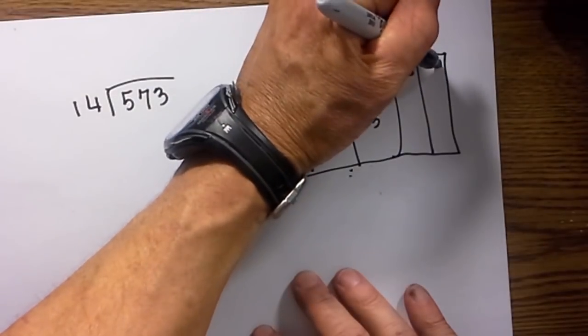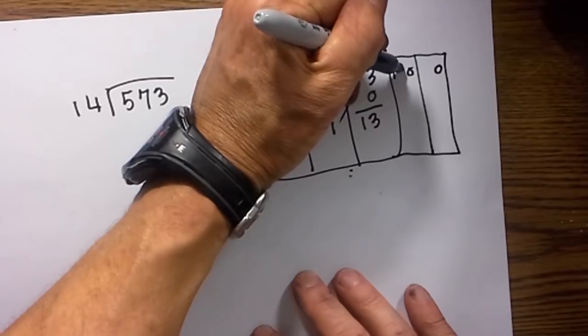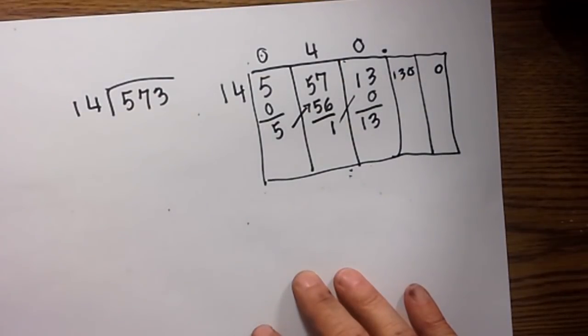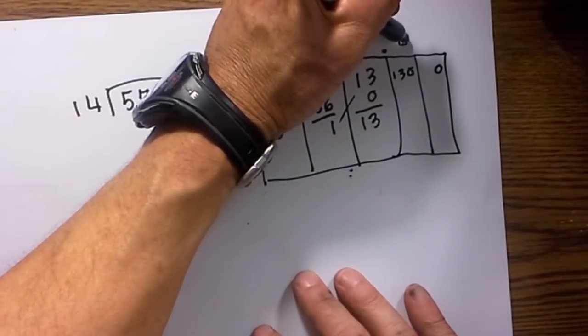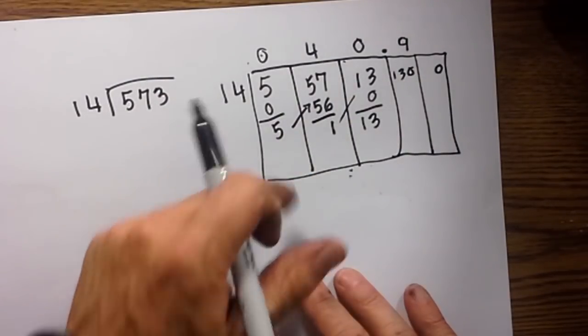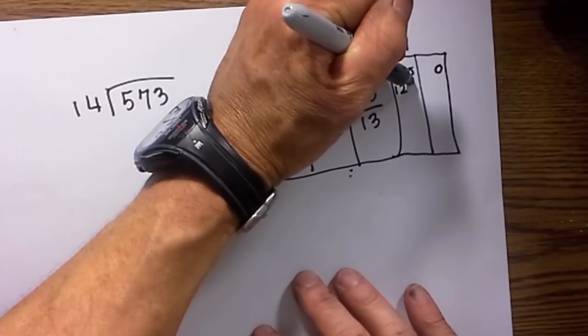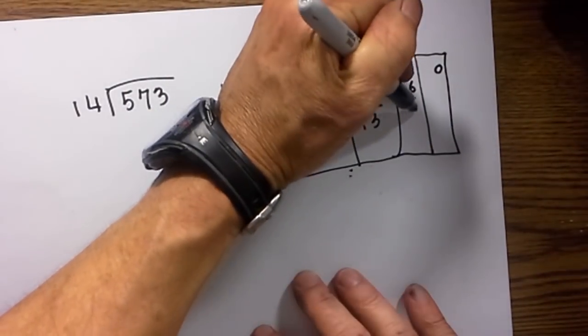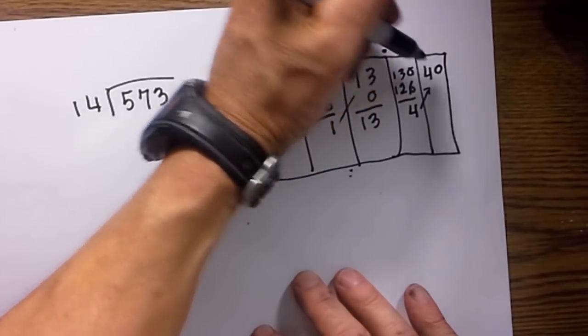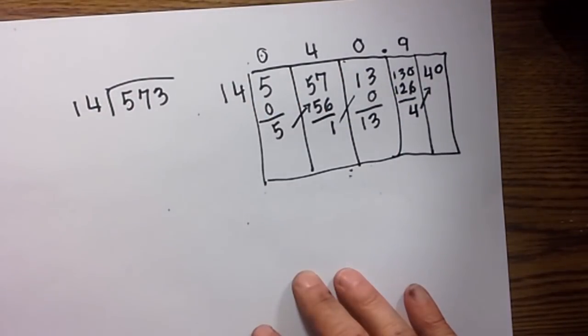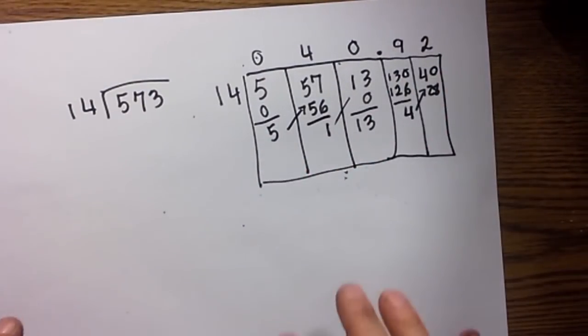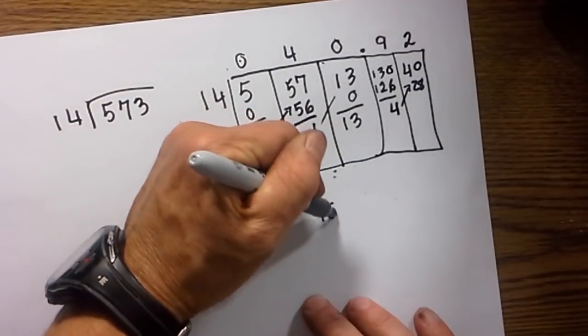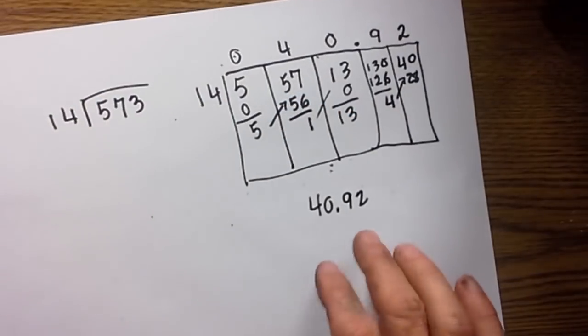So now let's put a zero and a zero. So 13 equals 130. Then we have 14 into 130, and 9 times 14 is 126. Bring down the 4, and we move to the next column. 14 into 40 will go—14 times 2 is 28—so it will go 2, and that gives us 28, and we could continue out. So the answer would be 40.92 to 2 decimal places.